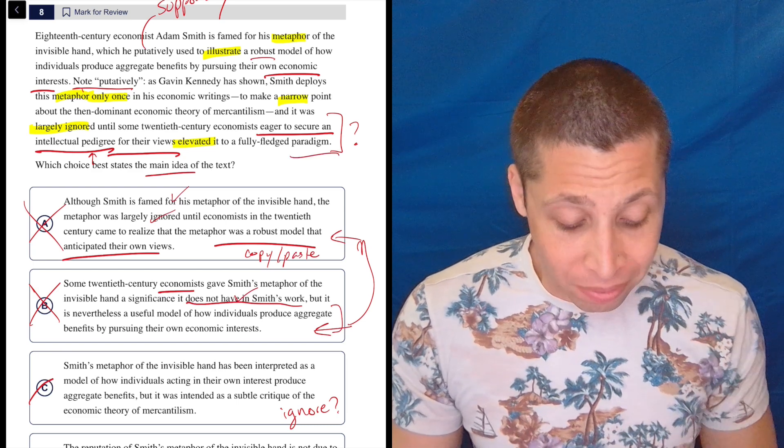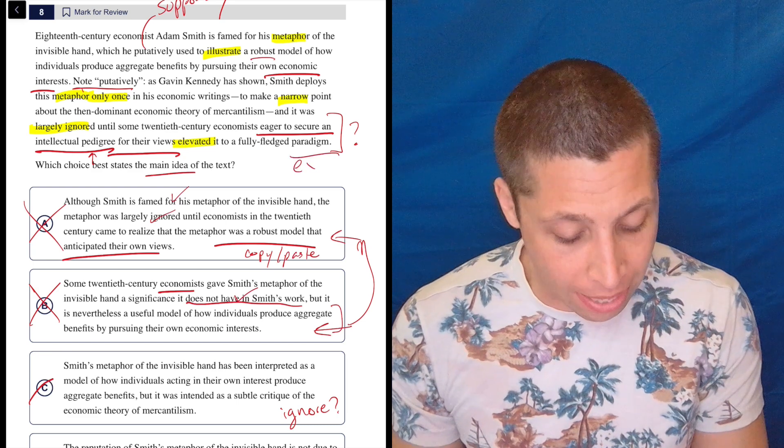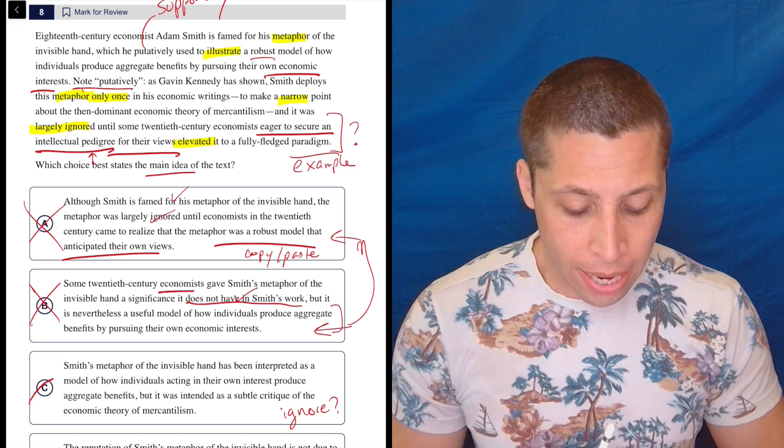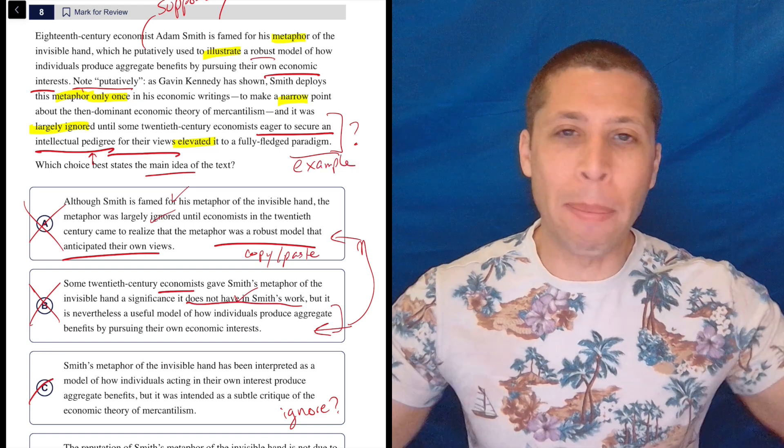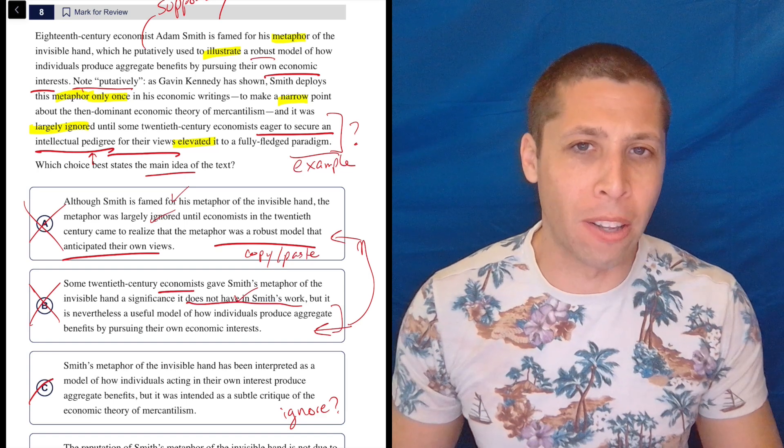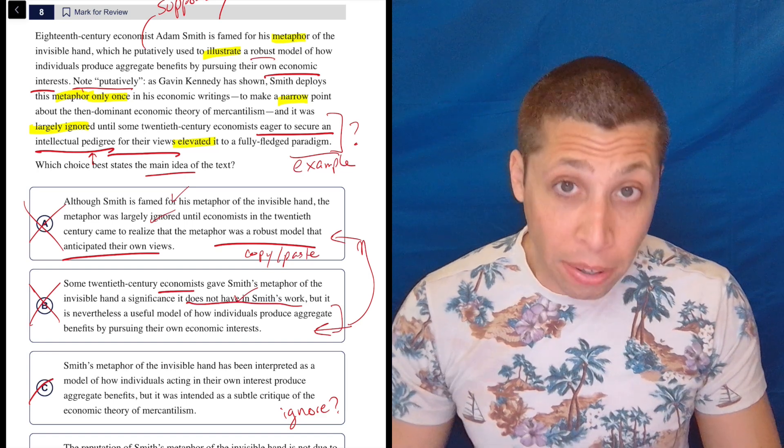And then a fully fledged paradigm, a paradigm would be like almost like an example. Something like that is probably the best way to put it. So it's a good way of thinking about economics is kind of what they're saying, even though Adam Smith only used it in this one very narrow way. Very hard question.